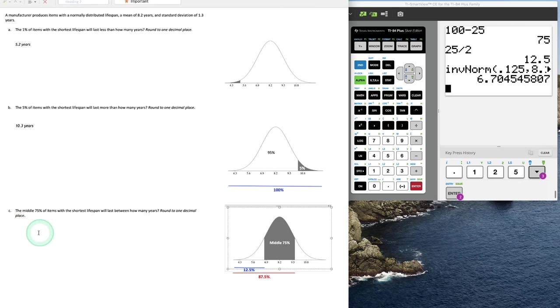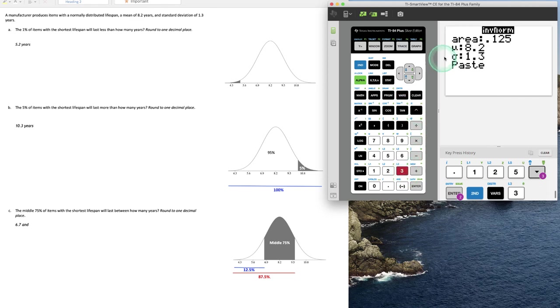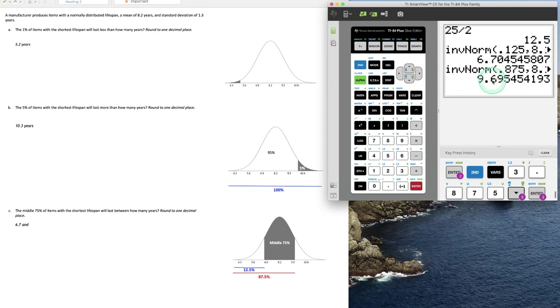So the middle 75% is between 6.7 and, let's find the larger x value around 9.5 years. The area to the left here in this case is going to be 87.5%, which is that 75% plus that tail of 12.5%. Going back to our calculator and putting in 0.875 for 87.5%, mean and standard deviation stay the same, we get 9.7.